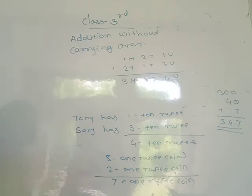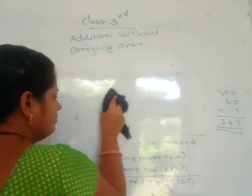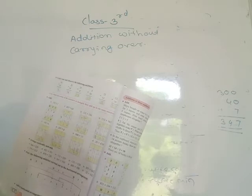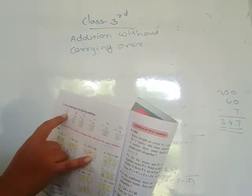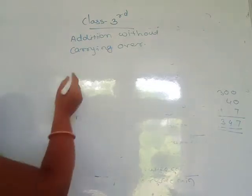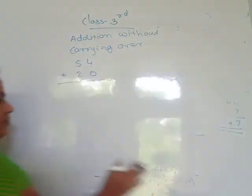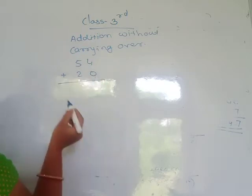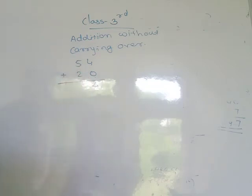Next, see page number 20. Carry out and observe the following additions. The number given is 54 plus 20 — arrange this vertically. Units place: 4 plus 0 equals 4. Tens place: 5 plus 2 equals 7. So 54 plus 20 equals 74.